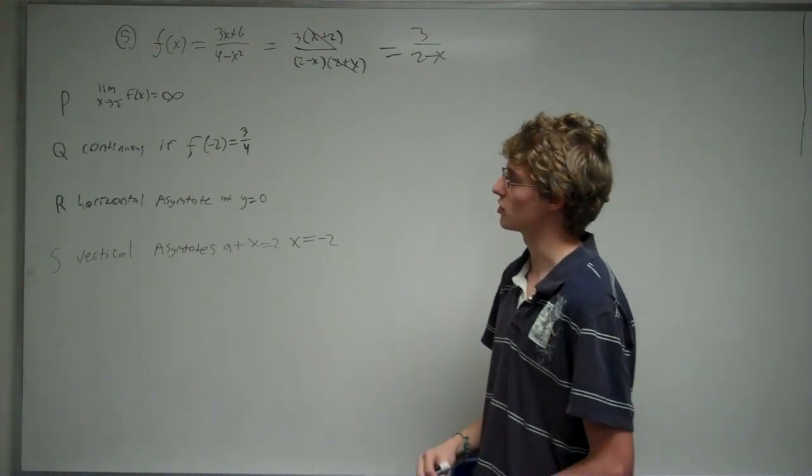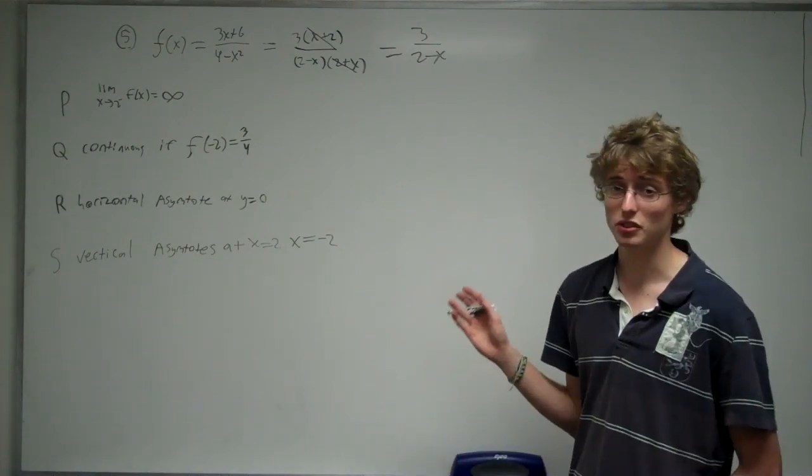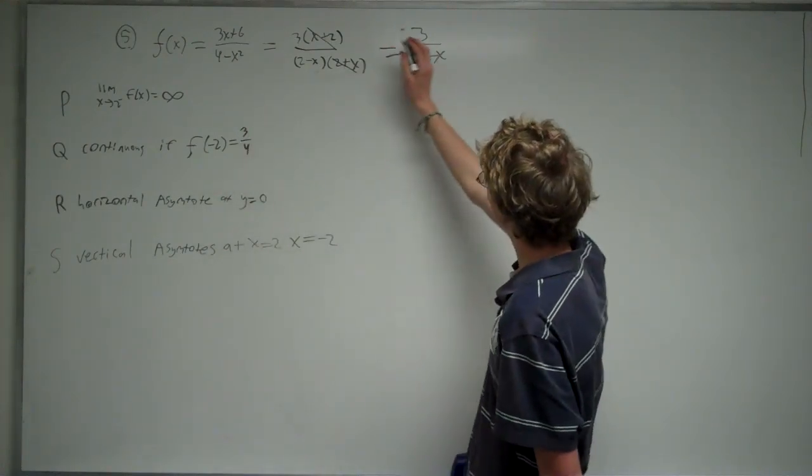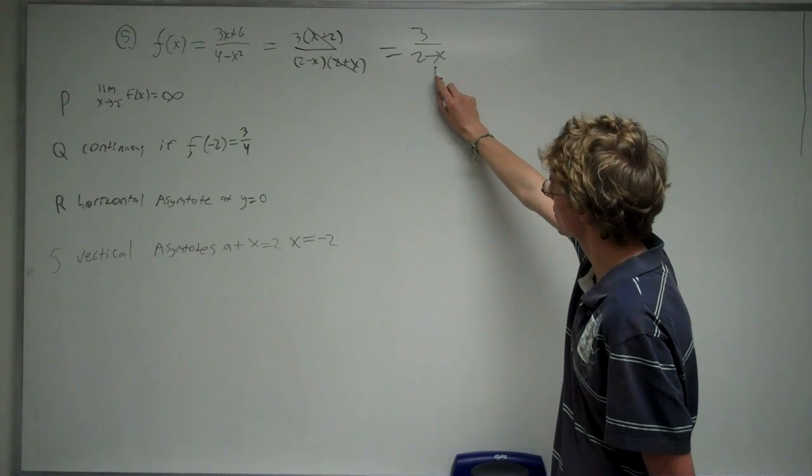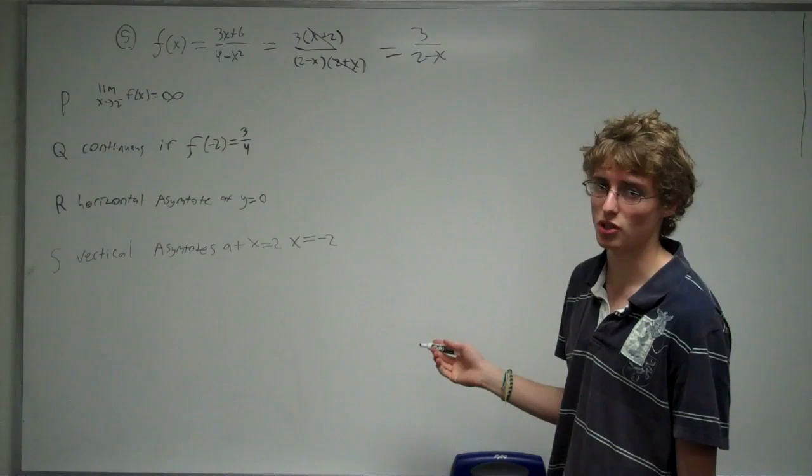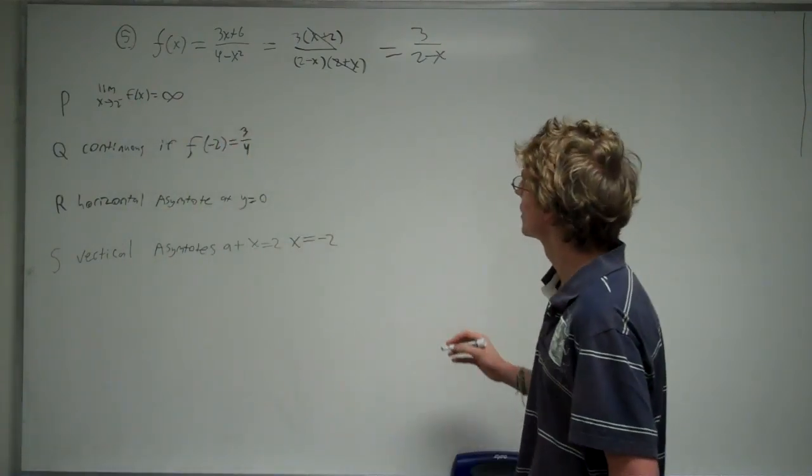The first is the limit as x approaches negative 2 from the left of f(x) equals infinity. If we plugged in 2 into this equation, we would get a 0 in this denominator, which is undefined. But this is 2 from the left.